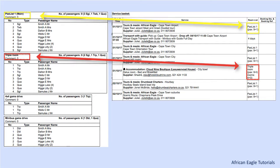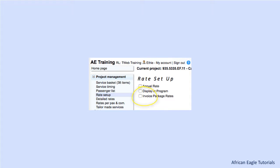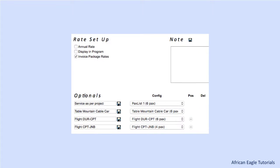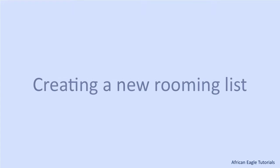How this is done depends on whether the project is set to invoice package rates or not. If the project is set to invoice package rates, rooming lists are created and linked along with optionals in rate setup. If the project is set to invoice detailed rates, multiple passenger lists are created and linked to the applicable services directly.